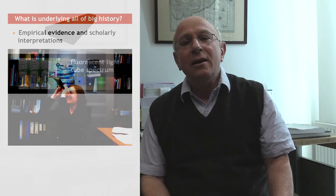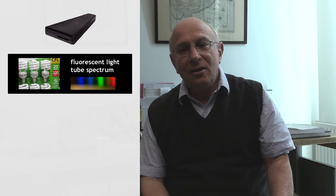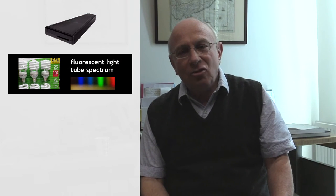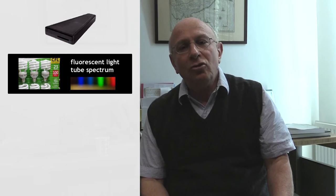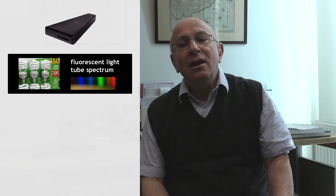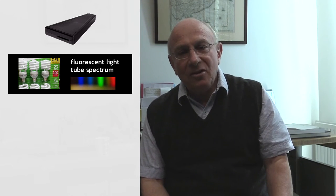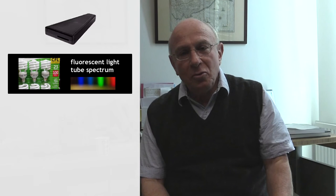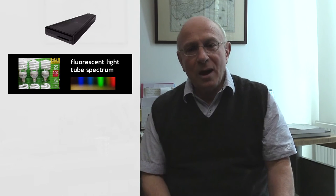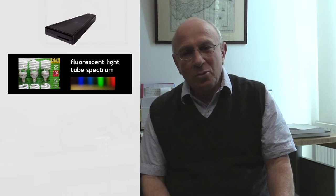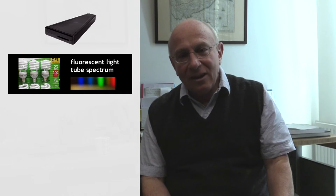This instrument splits the light into certain wavelengths. If you aim it at an artificial light source like this one, you can see the different wavelengths ranging from blue to red that it consists of. Apparently this light bulb produces different wavelengths that, combined, produce white light.